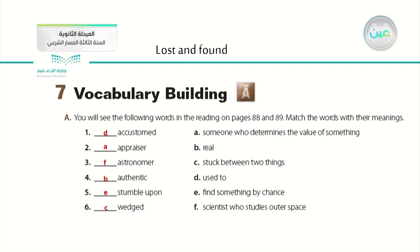The answers are as shown on this slide. Number one, accustomed is D — used to. Number two, appraiser is A — someone who determines the value of something. Number three, astronomer is F — a scientist who studies outer space. Number four, authentic is B — real. Number five, stumble upon is E — find something by chance. And the last one, wedged is C — stuck between two things.